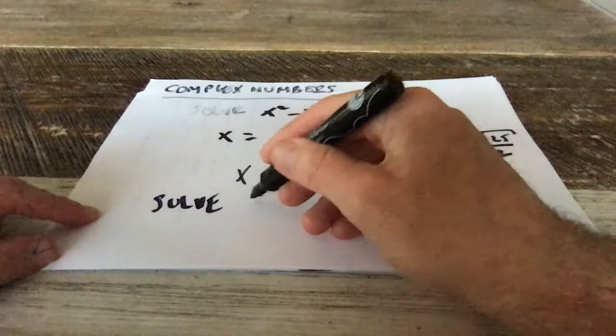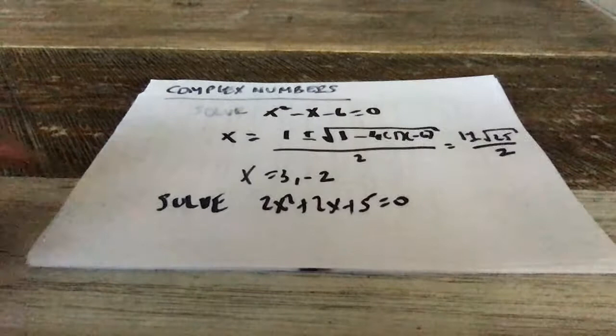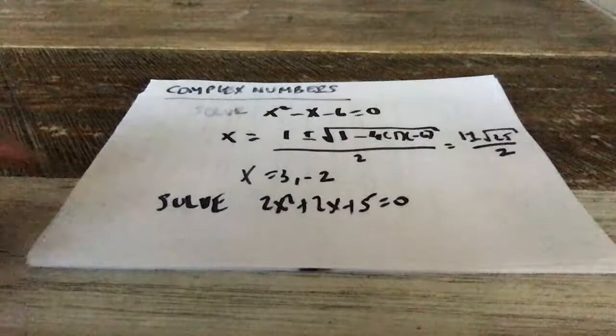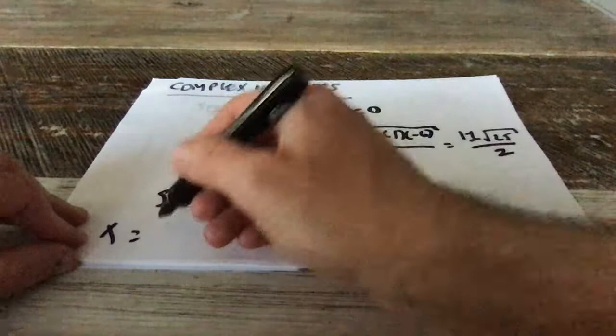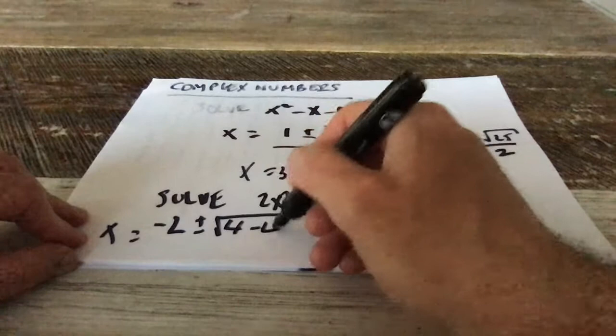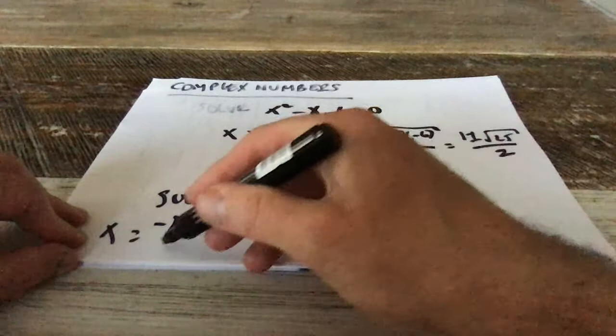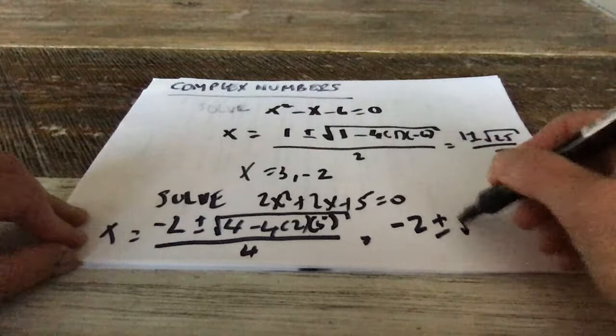So if we wanted to solve this one now, 2x squared plus 2x plus 5 is equal to 0, and we're using our formula here, we get x is equal to minus b, so it's minus 2, plus or minus the square root of 4 minus 4 by 2 by 5, all over 4. And that gives you minus 2 plus or minus the square root of minus 36 over 4.